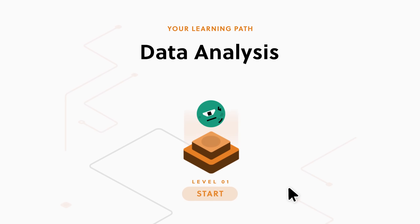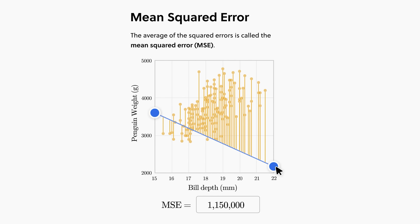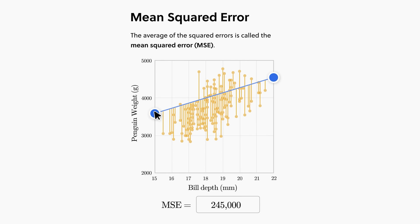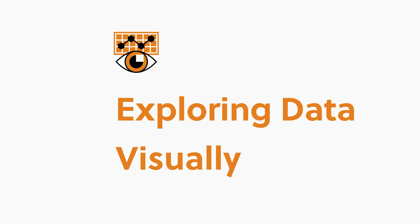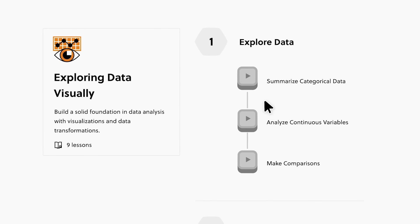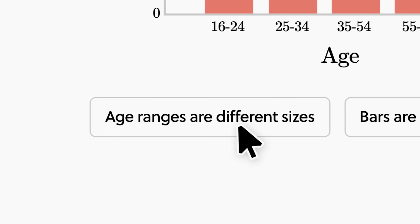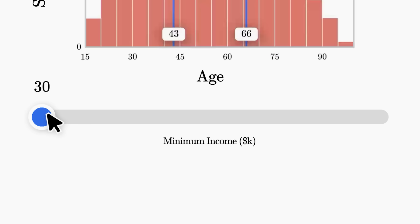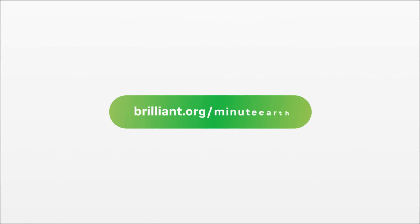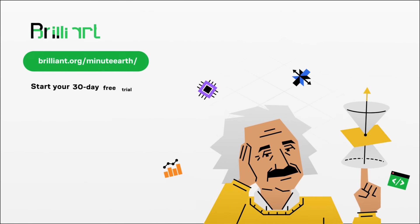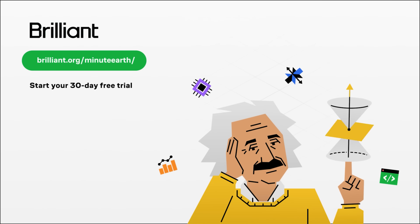And Brilliant just launched a ton of new data courses, all of which use real-world data to train you to see trends and to make better informed decisions. I'm currently making my way through their new course on exploring data visually, where I'm learning how to parse and visualize not just large quantities, but massive data sets in order to make them easier to interpret. To try everything Brilliant has to offer for free for a full 30 days, visit brilliant.org slash minute earth, or click on the link in the description. You'll also get 20% off an annual premium subscription. Thanks, Brilliant.